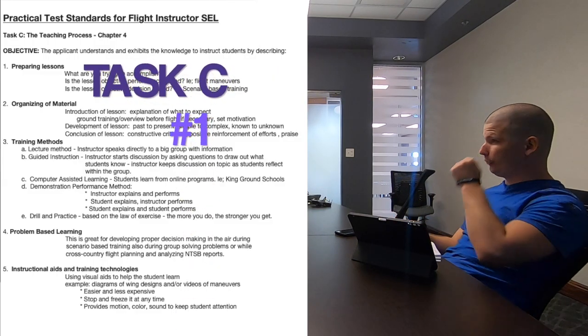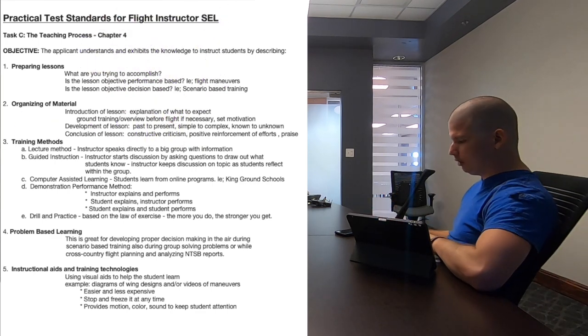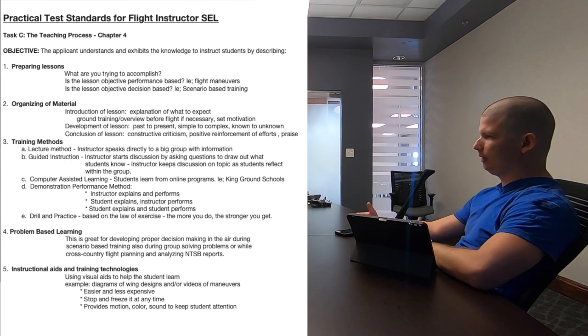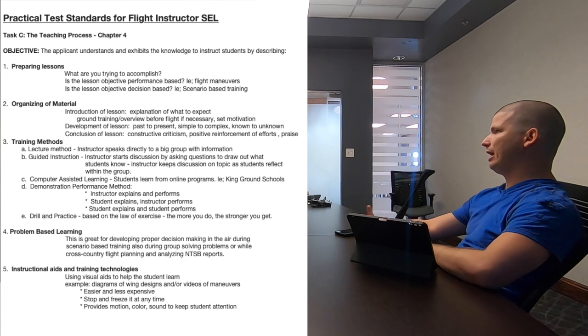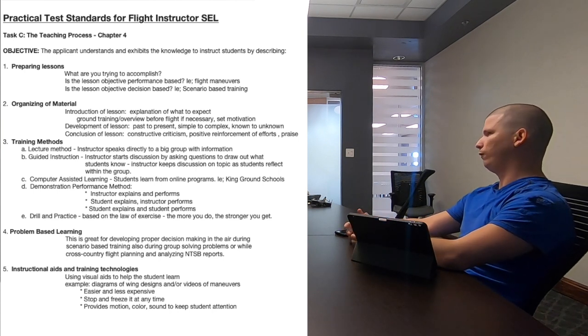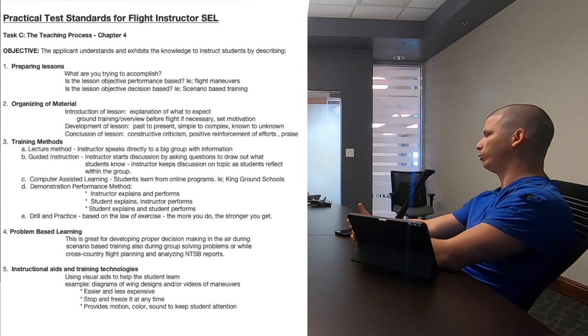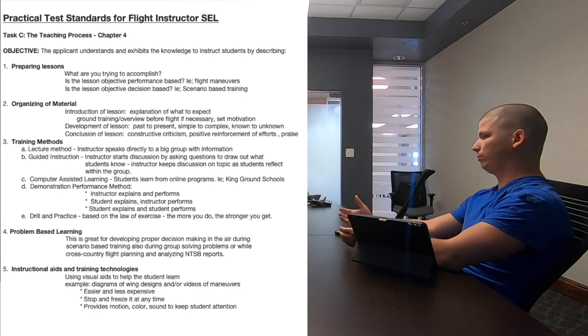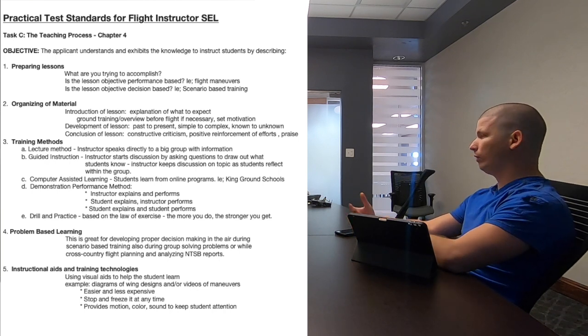Task C — the first item is preparation of a lesson, which is how you prepare your lesson before you ever give it to the student. You want to do objective performance-based lessons. For example, with slow flight, your objectives are controlling the airplane at just above stalling speed, maintaining altitude, maintaining heading, and maintaining airspeed. That's your goal for that one lesson. You start the student at 60–65 knots and work them toward the target.